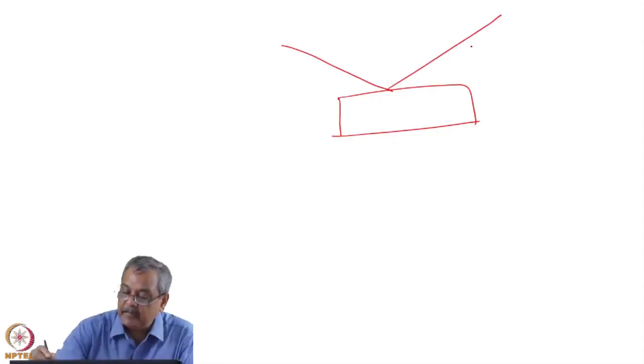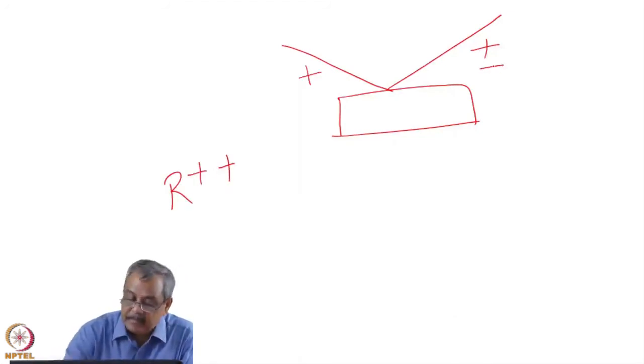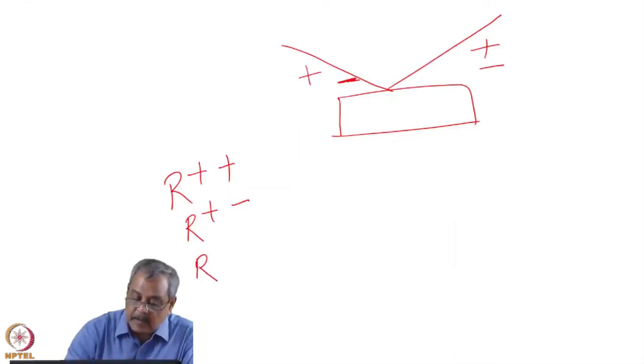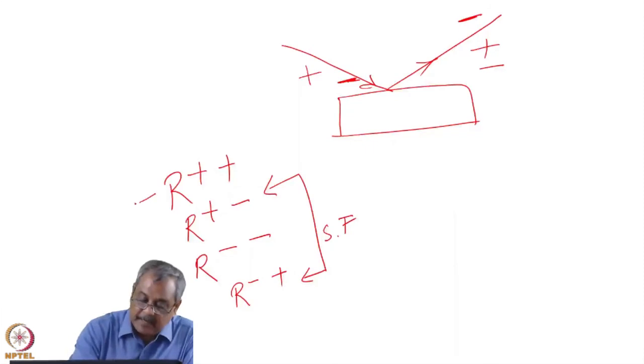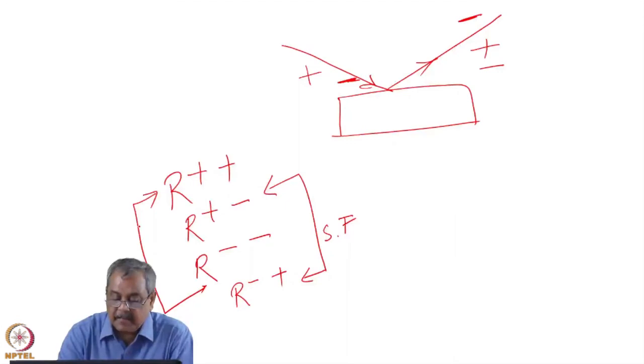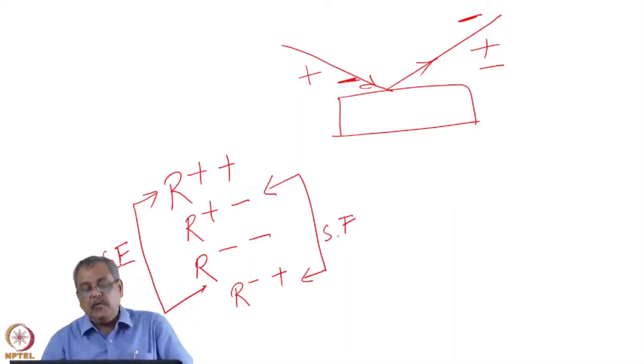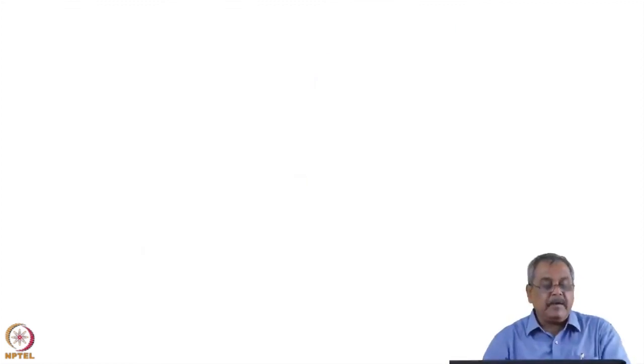Now my measurements will comprise, this is my sample. I am doing analysis of the reflected beam. Plus goes to plus is R plus plus. Then plus goes to minus, R plus minus. Then I have got a down polarized beam. Then minus goes to minus, R minus minus. And then there are two spin flips. Plus going to minus and minus going to plus. So we have got four sets of data. Two of them are spin flips.